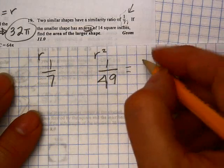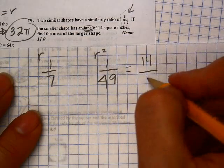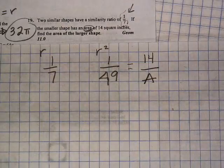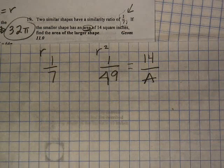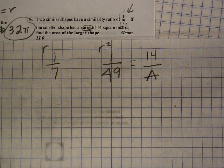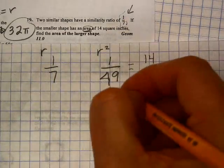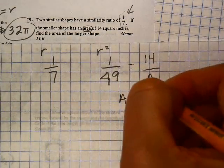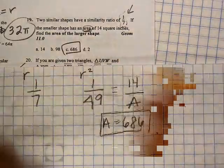So if the smaller one is 14, and I want to find the area of the larger one, this is how I would set that up. I would just have 14 times 49, which would give me 686 as my answer, which is letter C.